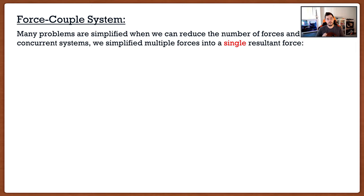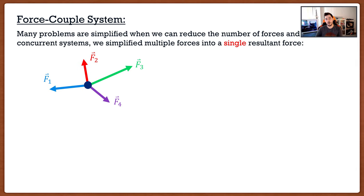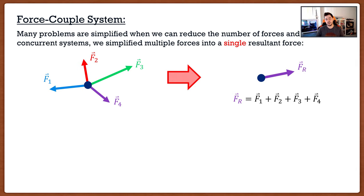So: force couple systems. A lot of the time before, we talked about how if we have a lot of forces acting on a particle, we can simplify them to a single resultant force. We had a lot of forces acting upon a particle, and we were able to combine them into a single resultant force. Finding this resultant force was fairly simple — the hardest part was getting all our forces into Cartesian vector notation, but once we did, we could find the resultant force simply by adding everything together.